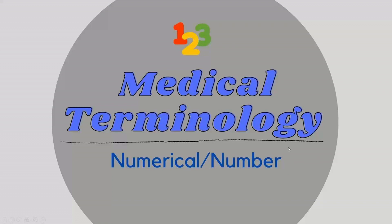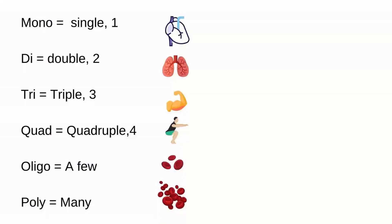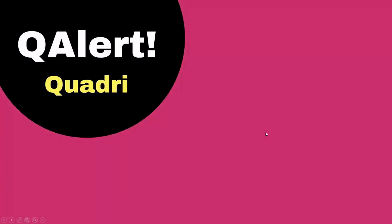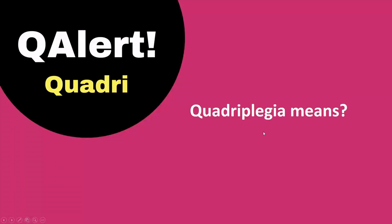Next, prefixes are numbers: mono refers to single or one, di means double or two, tri means triple or three, quad means quadruple or four, oligo means a few, poly means many. Question alert for quadri: quadriplegia means paralysis of all four limbs.